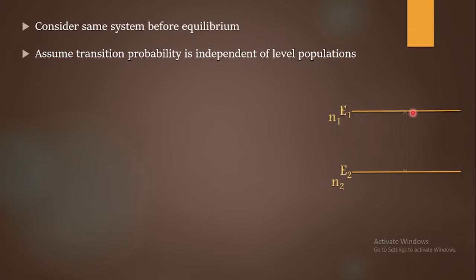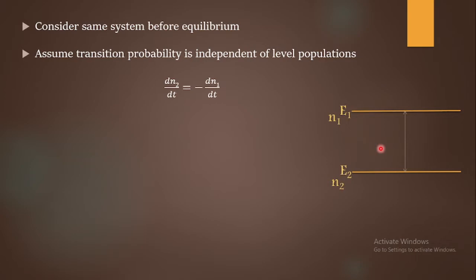Assuming the transition probability is independent of level populations, we can write dn2/dt = −dn1/dt — meaning if the population increases in one energy level, it decreases in the other. This can be written as n1/τ12 − n2/τ21, which is equation 3.